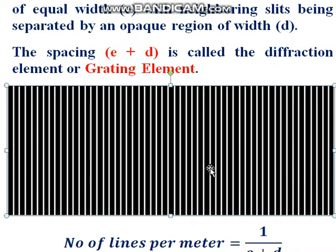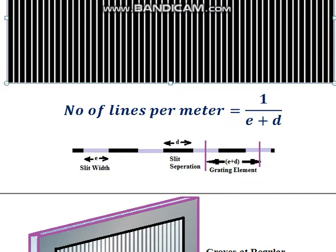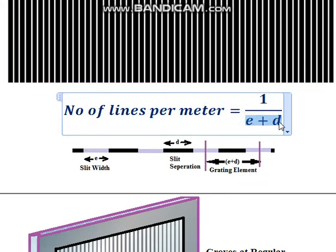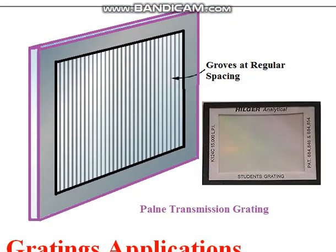In this figure you can see a large number of slits — the white lines displayed are the transparent part, while the black part is the slit separation. The slits are equidistant, parallel, close, of equal width, and have equal slit separation. This very large number of slits combined gives the grating effect. The inverse of (e + d) gives you the number of lines per meter. This distance e plus d is known as the grating element.